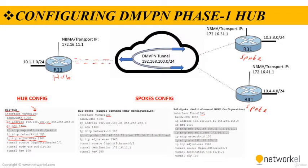Enabling NHRP uniquely identifies the DMVPN tunnel for the virtual interface with the interface parameter command 'ip nhrp network-id'. The NHRP network ID is locally significant and is used to identify a DMVPN cloud on a router, because multiple tunnel interfaces can belong to the same DMVPN cloud. It is recommended that the NHRP network ID match on all routers participating in the same DMVPN network. You can also see the command 'ip nhrp map multicast dynamic' here. This configuration is for the DMVPN Phase 1 hub.